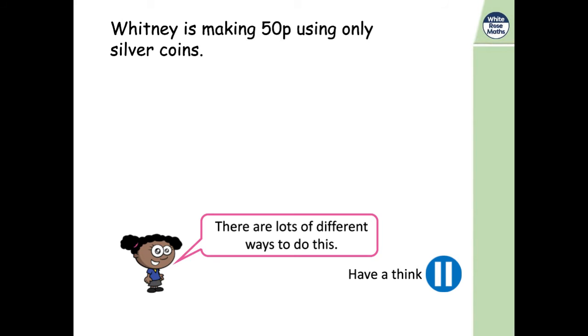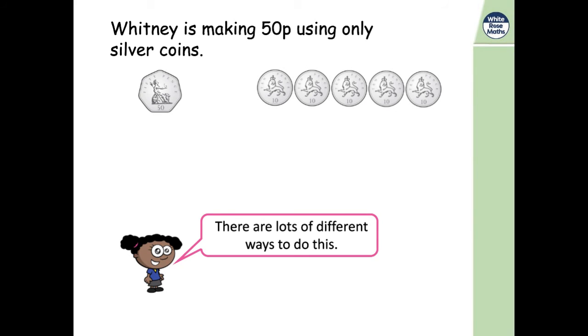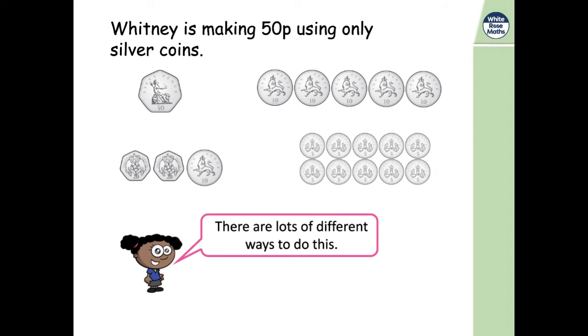Okay, Whitney says there's lots of different ways of making 50 pence using only silver coins. Do you agree with her? If you do, how could she do it? Okay, so you could just have a 50 pence. You could have five 10 pence coins. You could have a mix. You could have two 20 pences and a 10 pence.